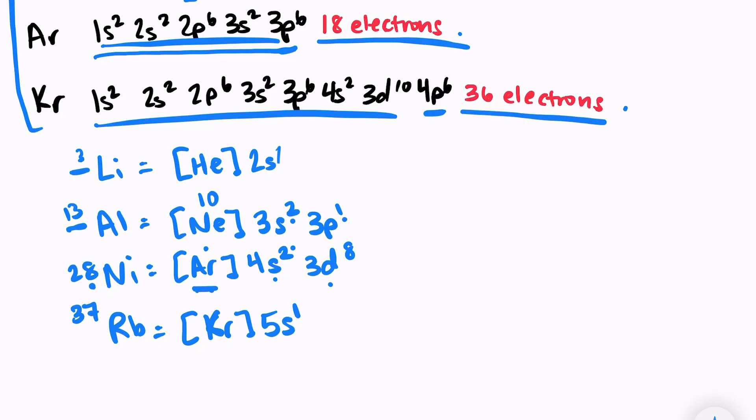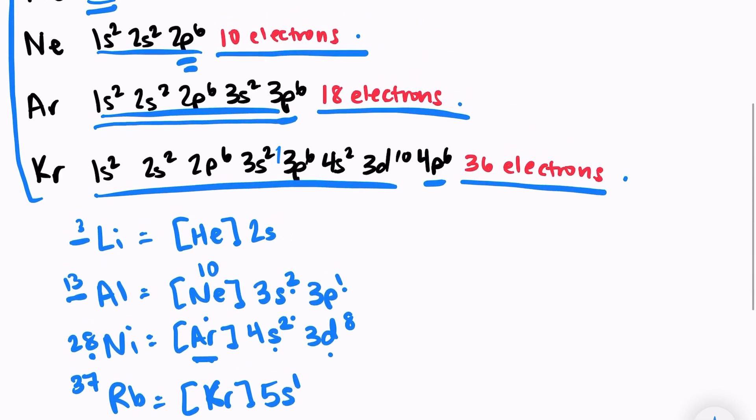So to write the shorthand configuration or the noble gas configuration, all that we have to do is write our noble gas in brackets and then pick up our electron configuration where the noble gas left off.